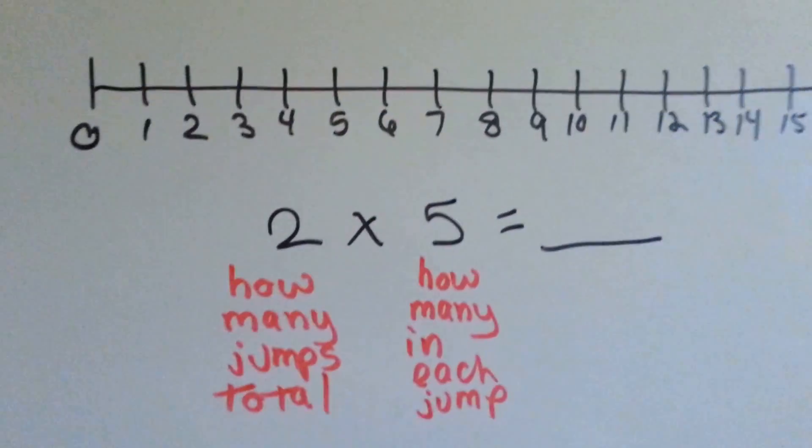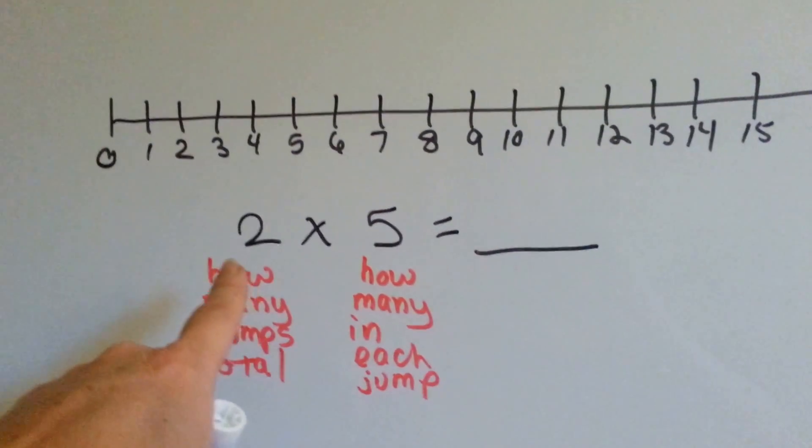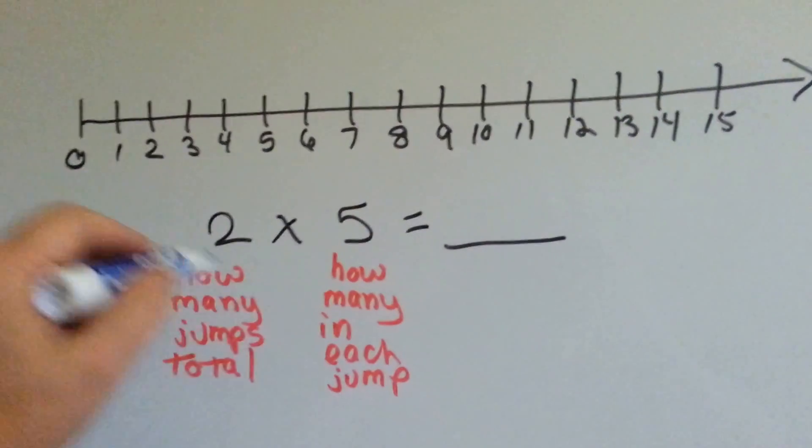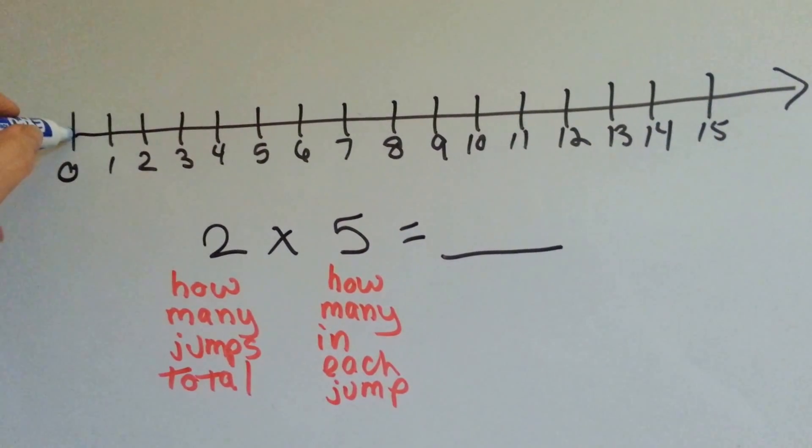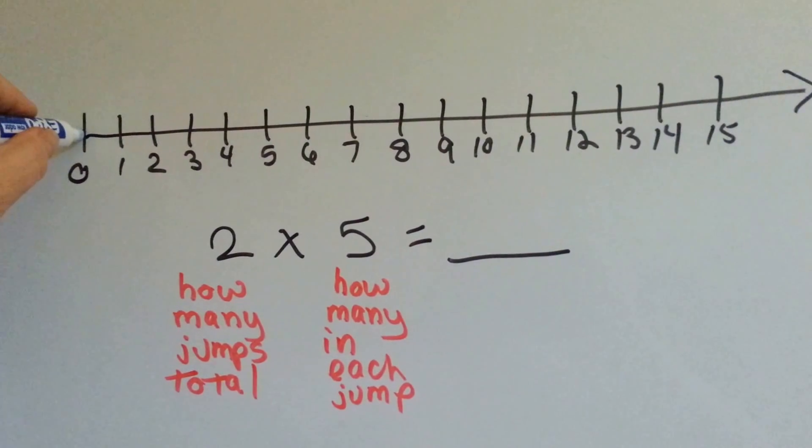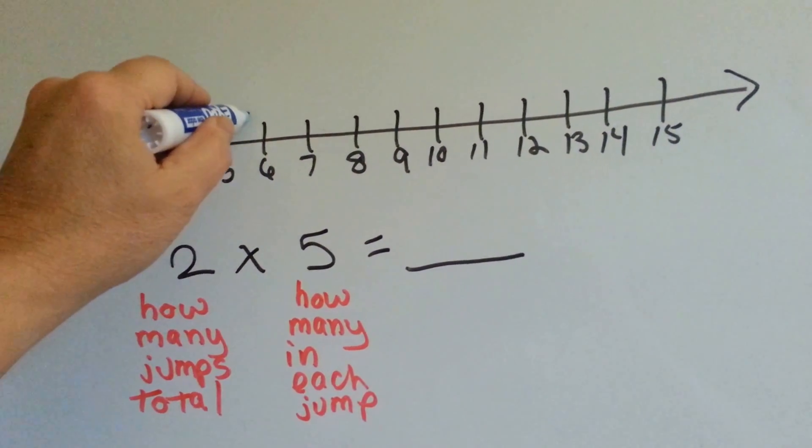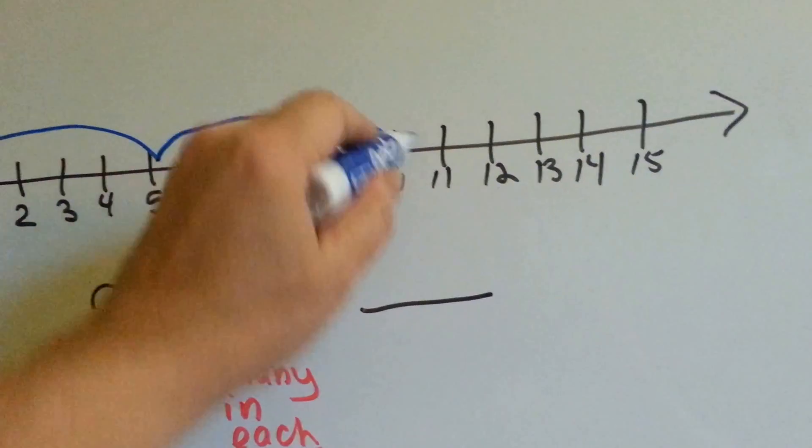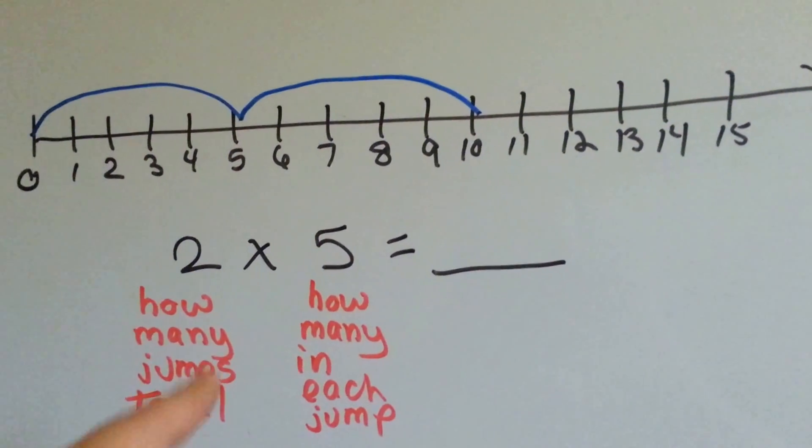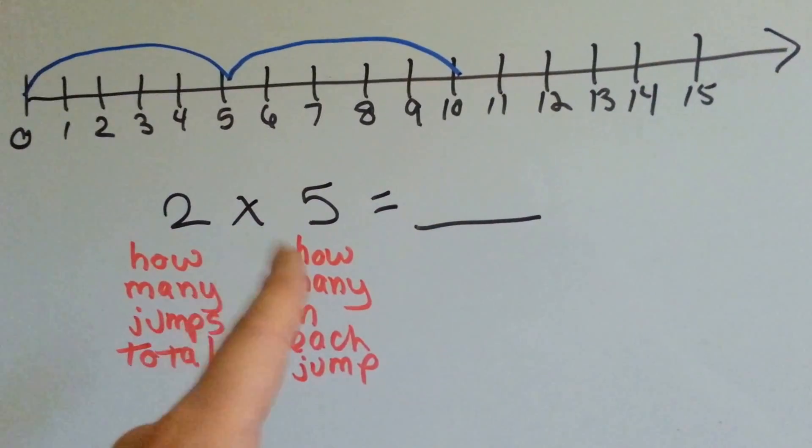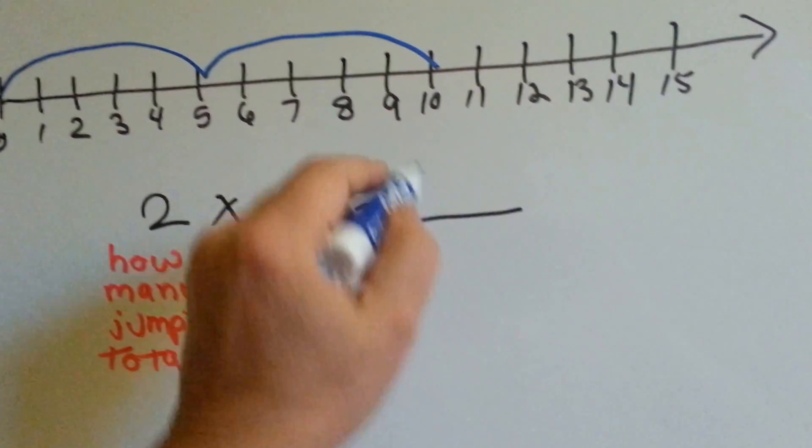Let's try it with this one. This is how many jumps we're going to make total and how many are in each jump. So, we've got to make 2 jumps of 5, 1, 2, 3, 4, 5, 1, 2, 3, 4, 5. See that? 2 jumps, 1, 2, with a 5 in each one. 2 times 5 is 10.